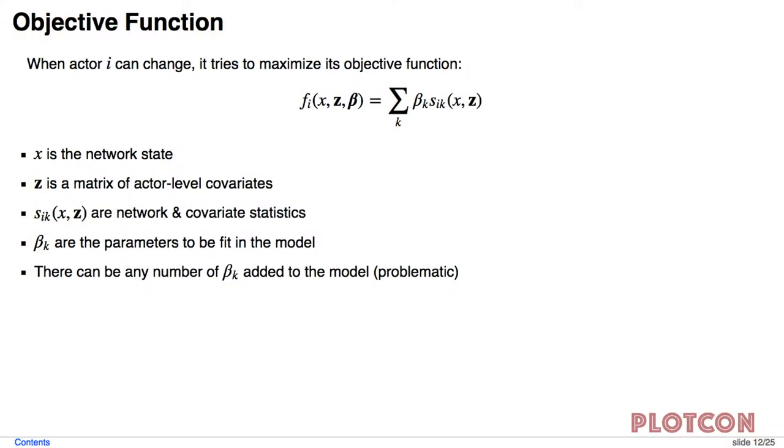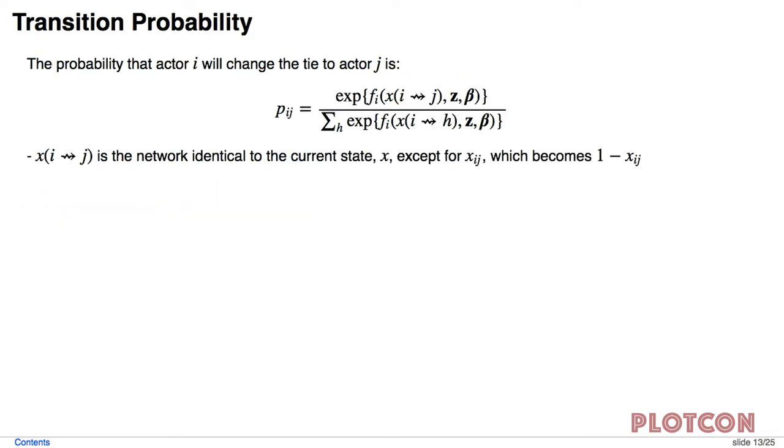So then what exactly is the utility function? That's their objective function and I've up to three Greek symbols now, but I think that's it. So we have a function of the current network state, any covariates. We have some statistics that we might want to collect on the network itself and on the actors on their covariates. And then we have some parameters that we want to fit because I'm a statistician, there's always parameters. There can be any number of these parameters added to the model. Last time I checked, there were like 87 possible parameters, which is a lot. This can be problematic, which we'll get to later. Then there's transition probability. It's a little easier to think about probabilities instead of some obscure function. So that's the probability that when actor i is chosen, it changes the tie to actor j.